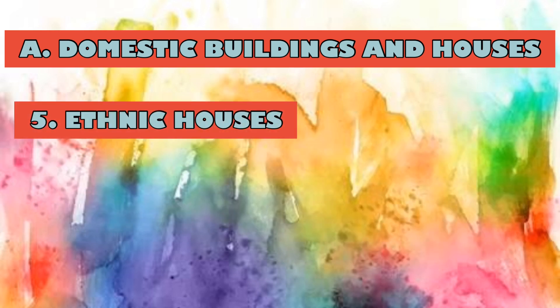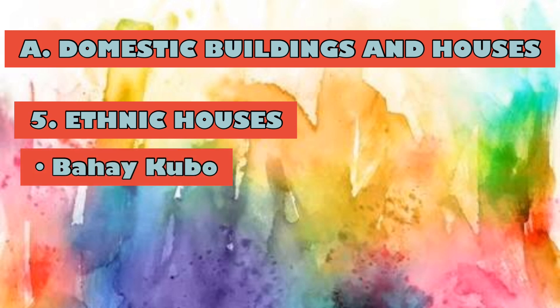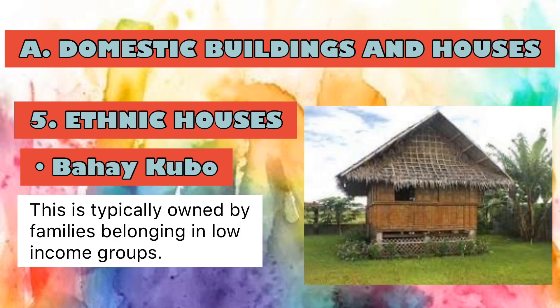Fifth is ethnic houses. We have two kinds. First is the Bahay Kubo, which is considered the ethnic house of Christian peasant families living in lowland areas. The Bahay Kubo is typically owned by families belonging to low-income groups. It has pile construction and a roof sliding on all sides. The Bahay Kubo has sliding windows for ventilation. The owner can easily arrange house units since it only has one room, allowing people to move freely and interact with others, even those living outside the house.